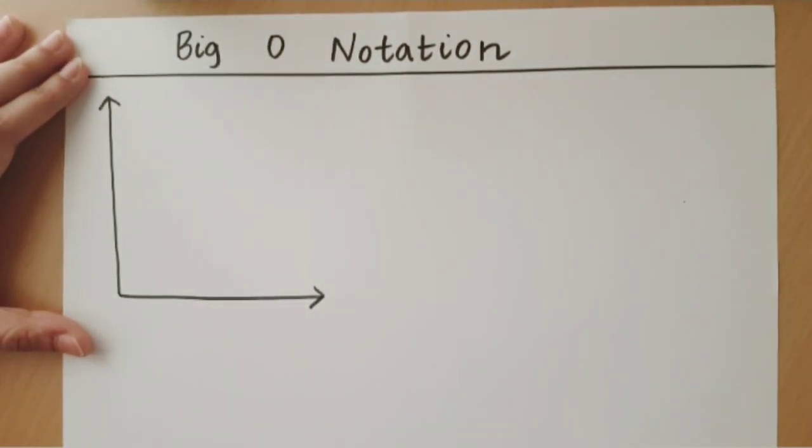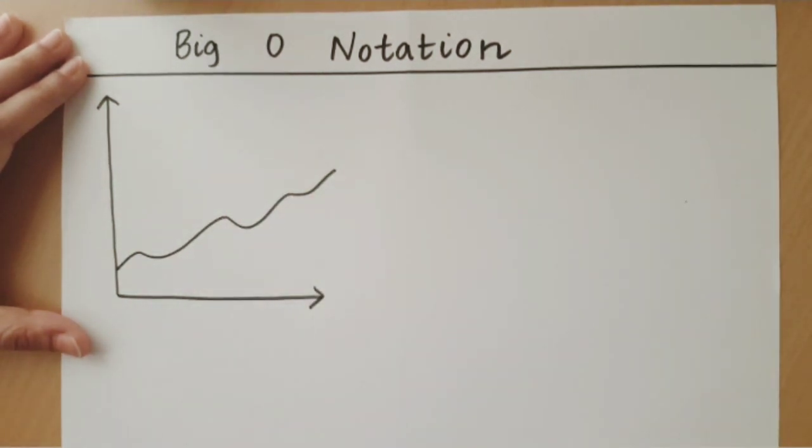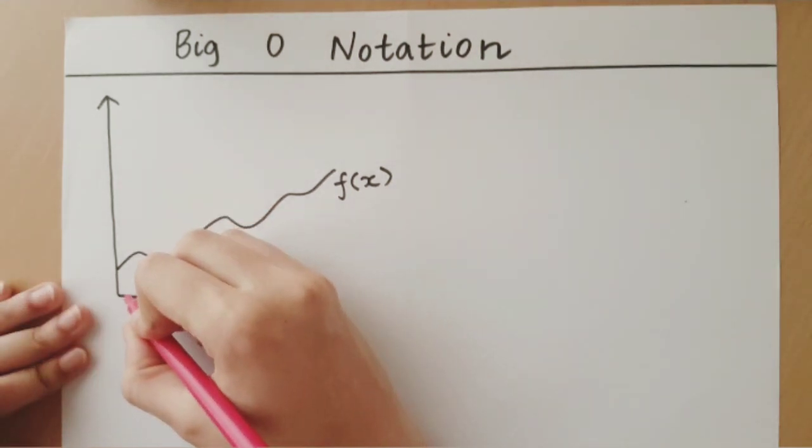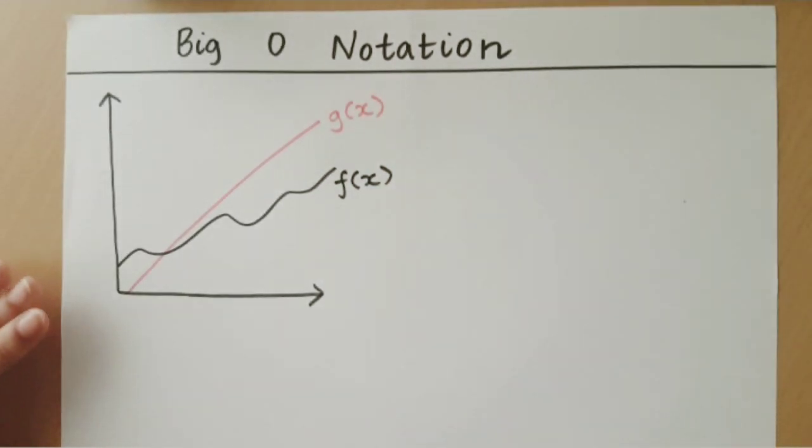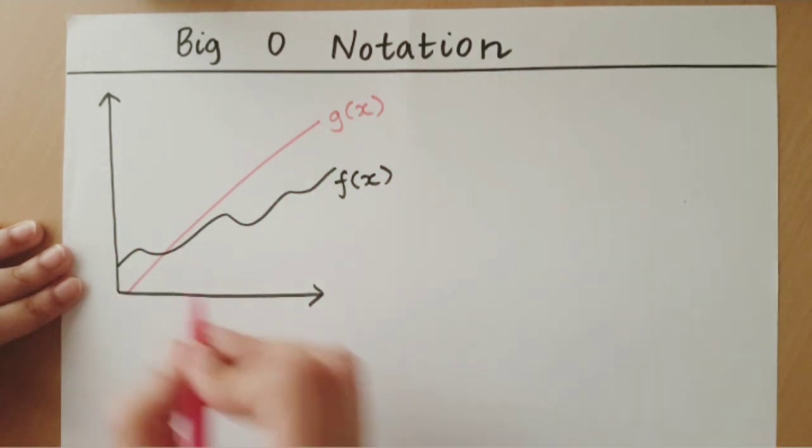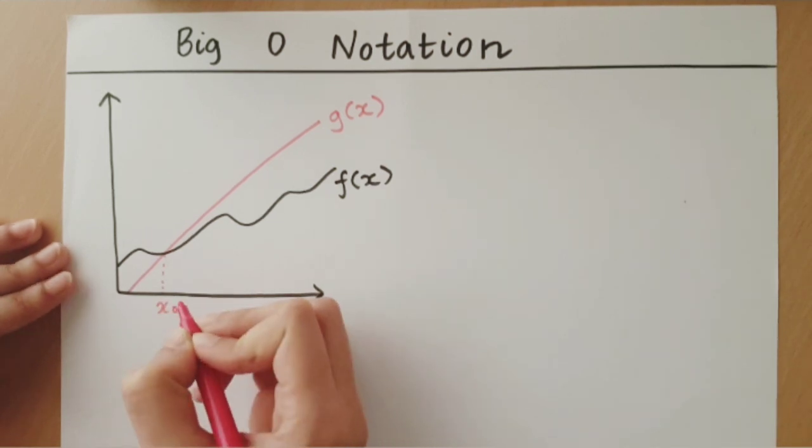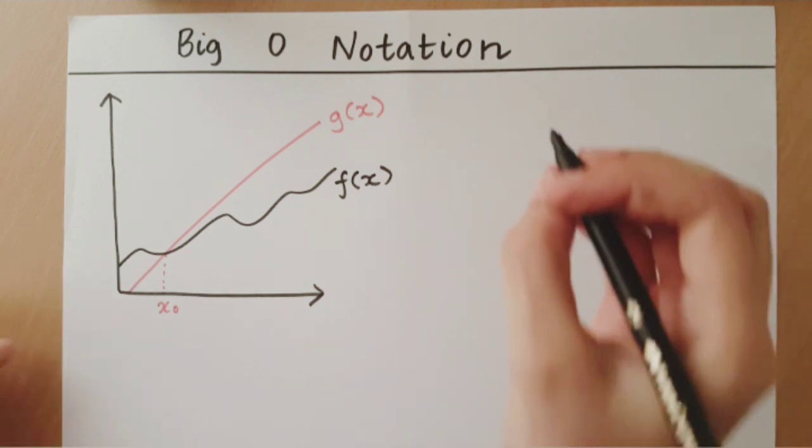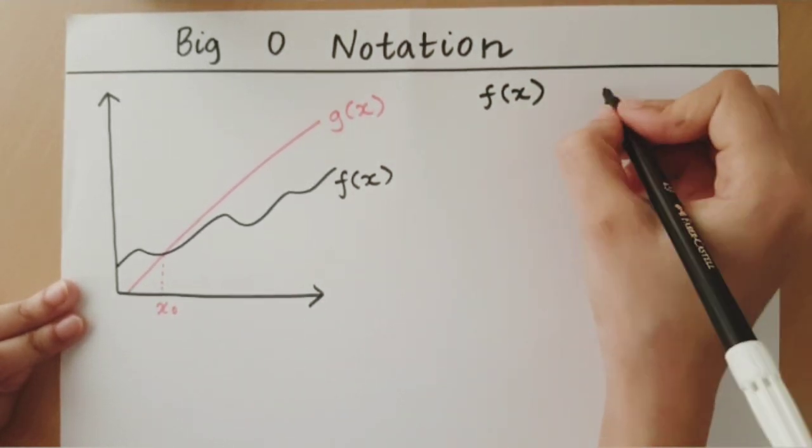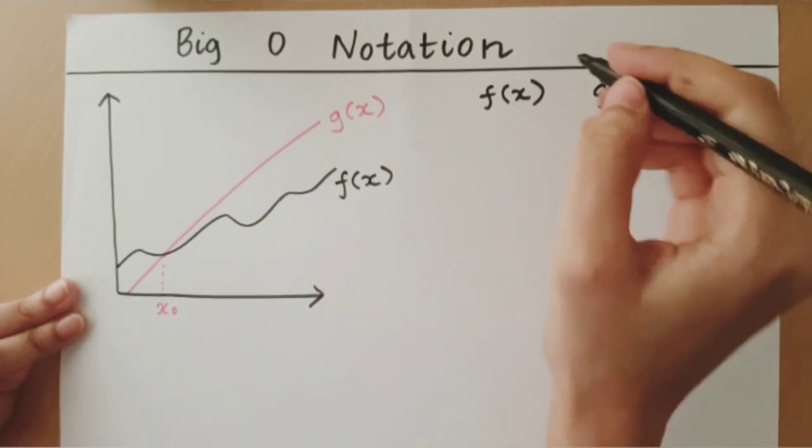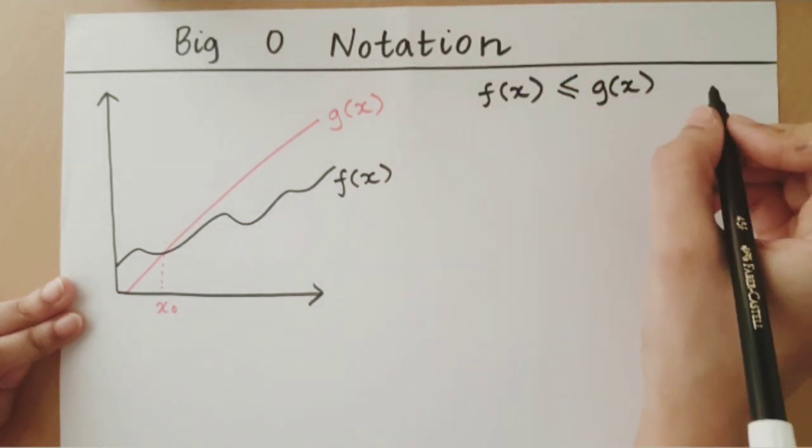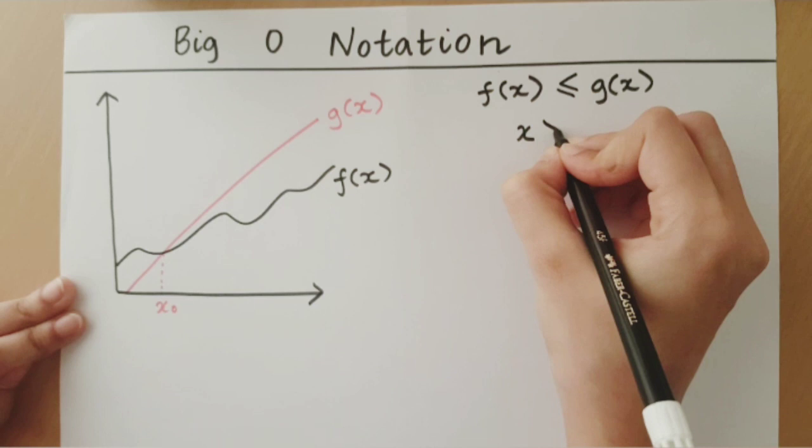Let us say I have a function f of x. So, this is f of x. We say that g of x is the big O of f of x if g of x is greater than f of x for all points after a point x0. Let me repeat that, if we have a function f of x, there exists a function g of x such that g of x is greater than or equal to f of x for all points of x where x is greater than some x0.